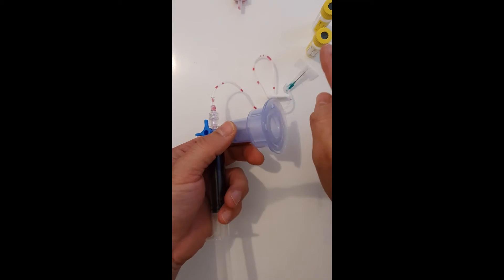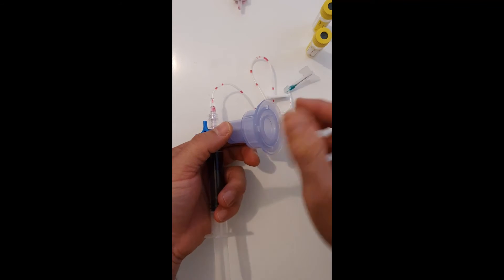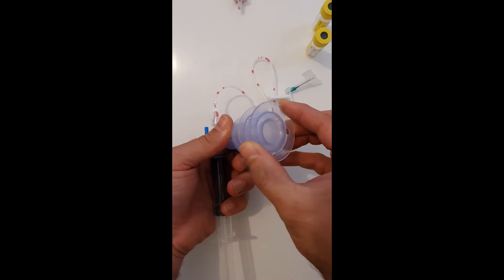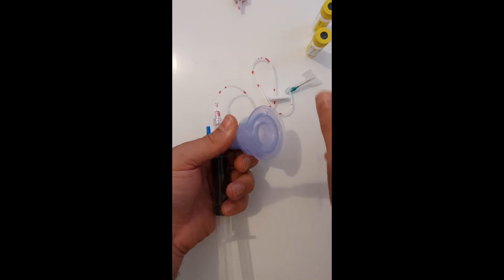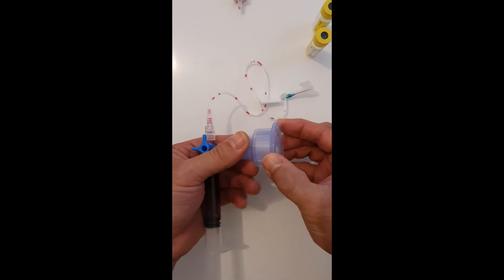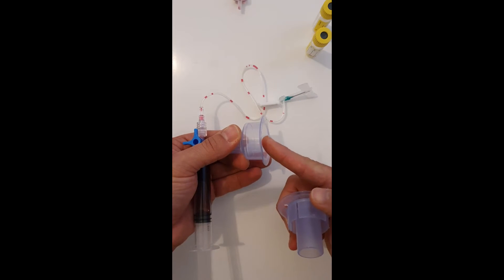If you're using the standard vial, you will just leave this end cap in place. Otherwise, if you're using the larger vacutainer, you can remove it and it will go straight inside.